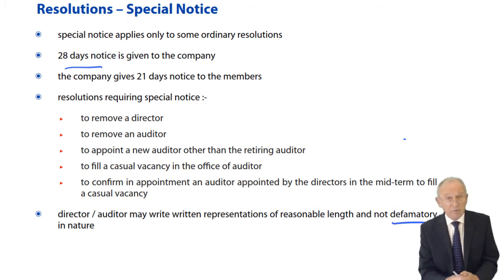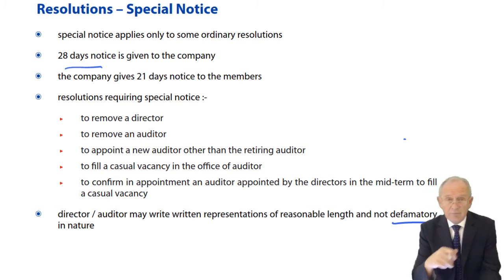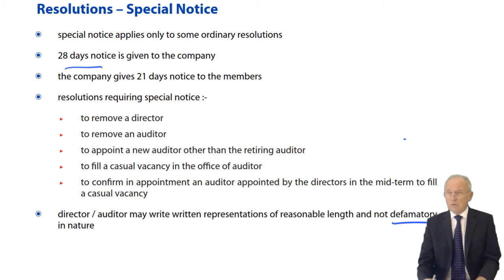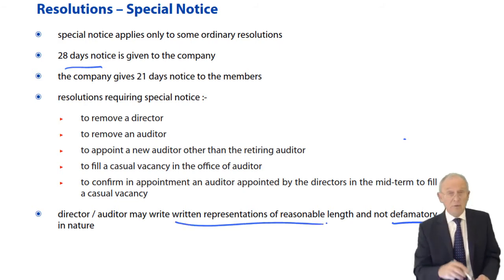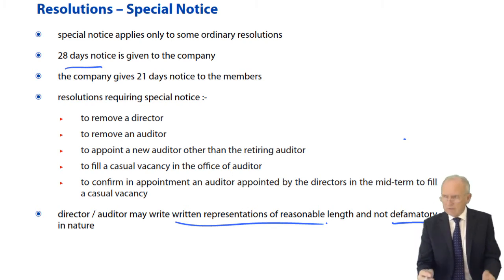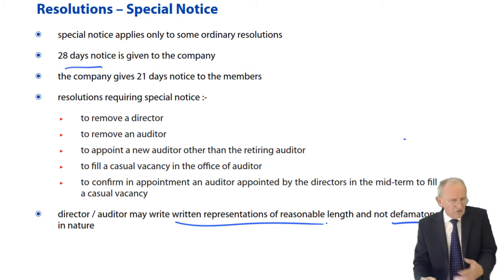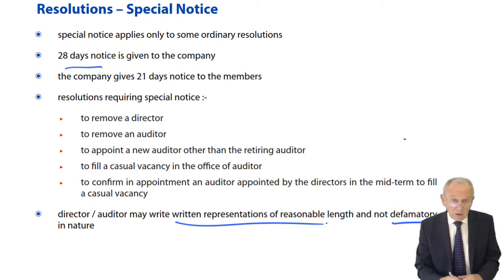They may make written representations of reasonable length and not defamatory in nature. To defame is to be nasty — for example, saying things like 'I'm fed up working with this group of incompetent directors.' That would be defamatory and not acceptable. If written representations are received in such a form, the company can go to court and ask whether they are required to circulate them among members, arguing that they are defamatory in nature.